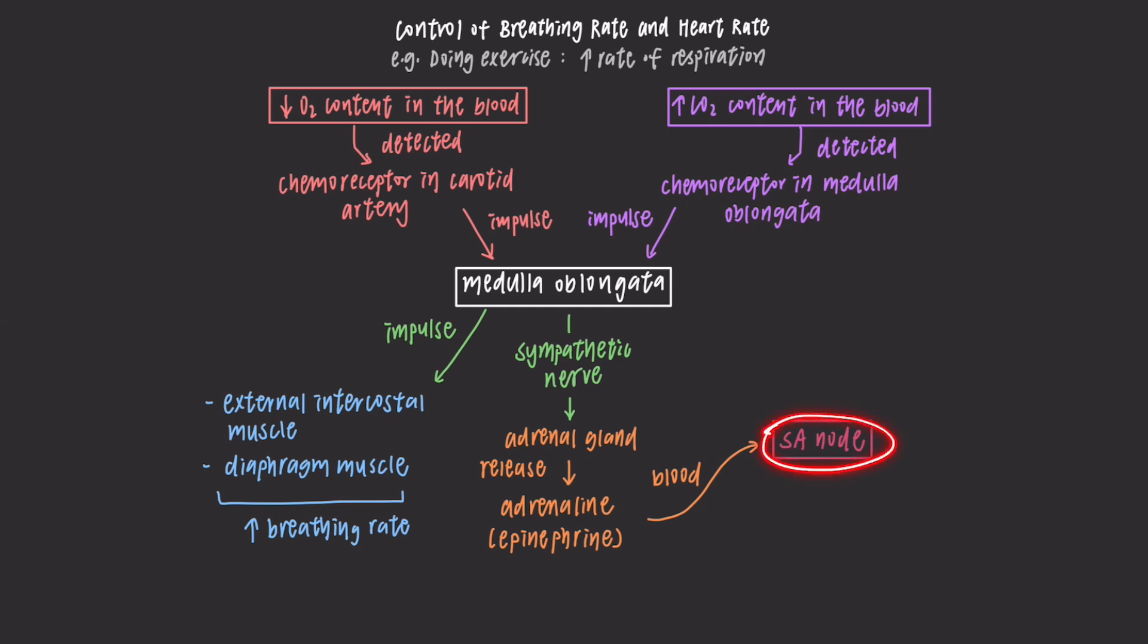So the SA node receives stimulation from both the endocrine system and nervous system to increase the heart rate and the cardiac output.